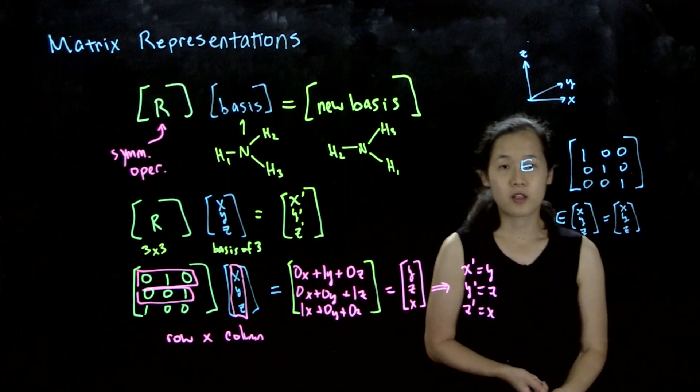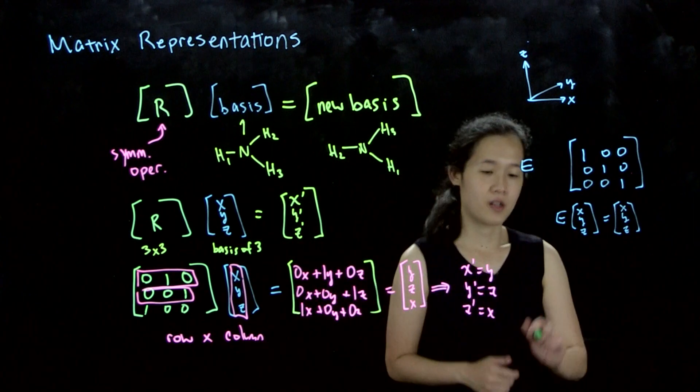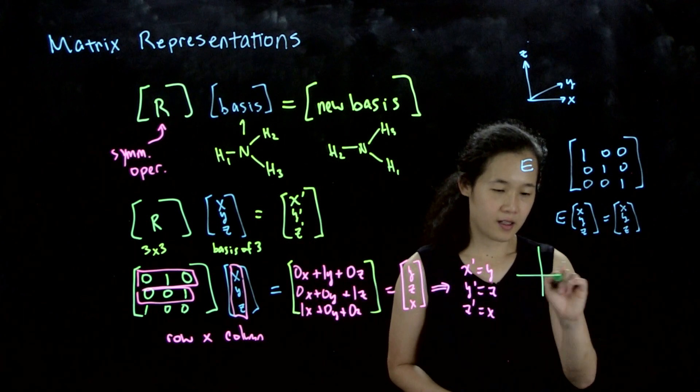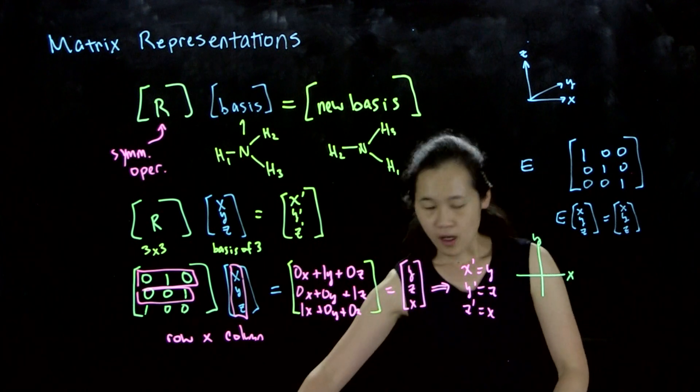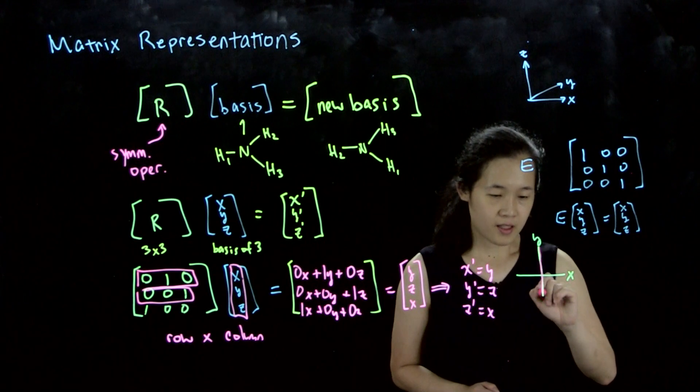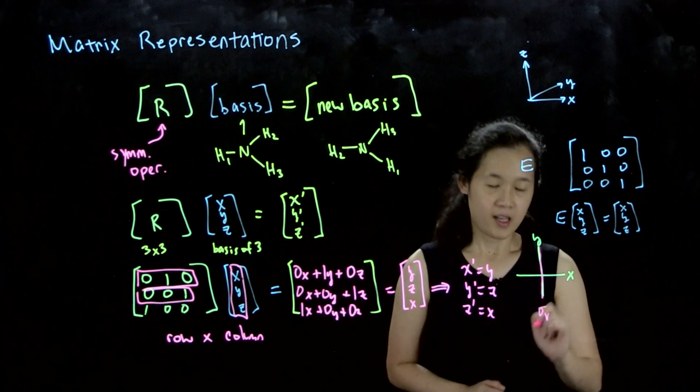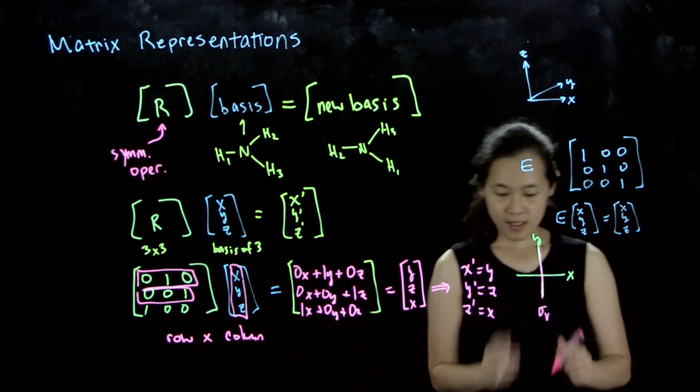For example, let me redraw our coordinate system with x and y. Let's suppose we wanted to do a mirror, sigma_v, that contains this y axis. What I mean is that sigma_v contains the z axis too.